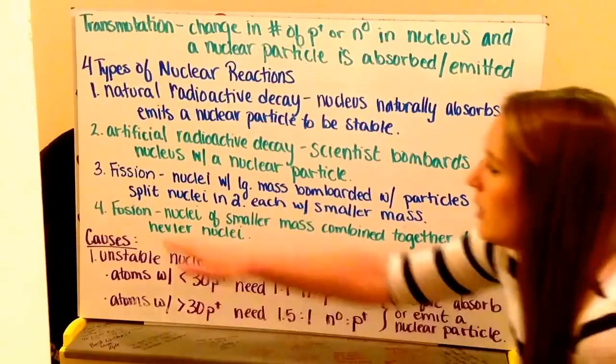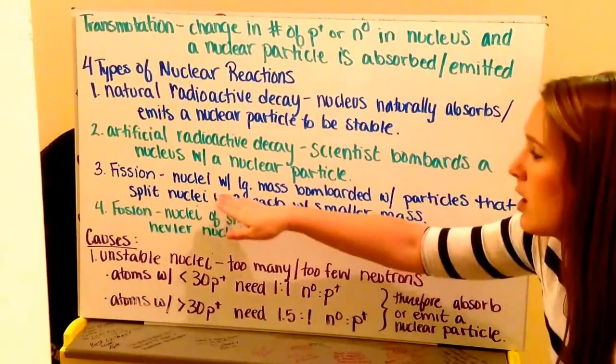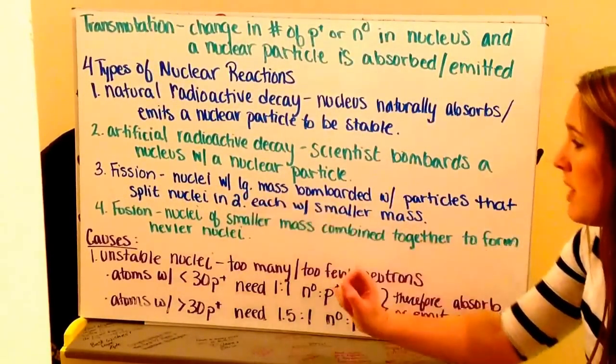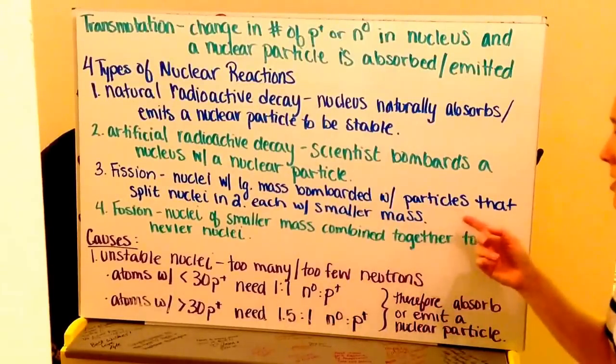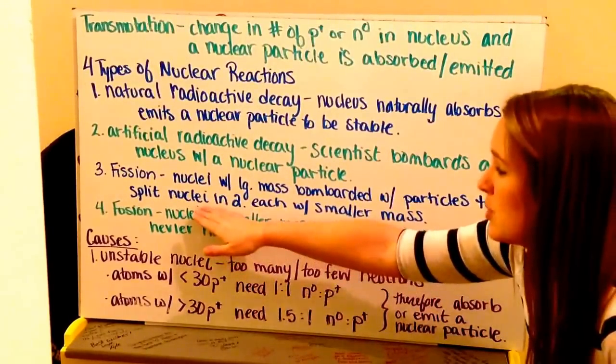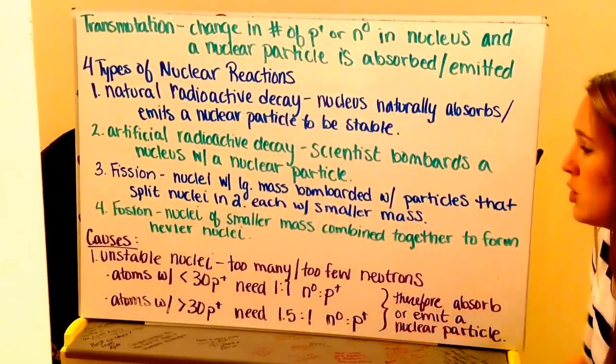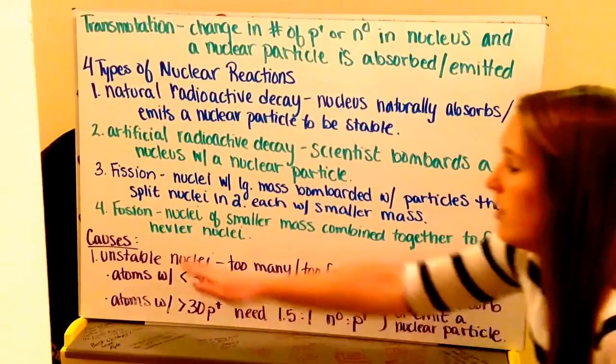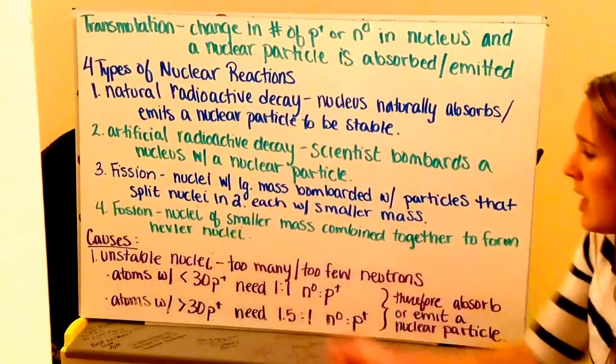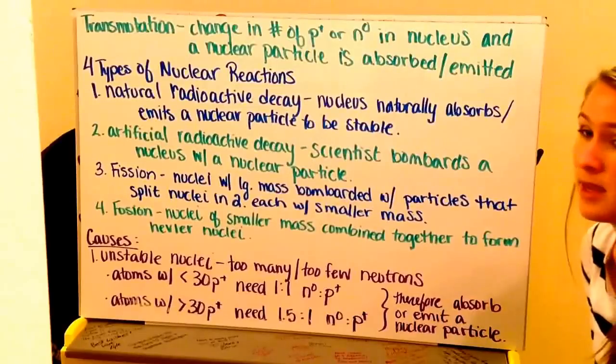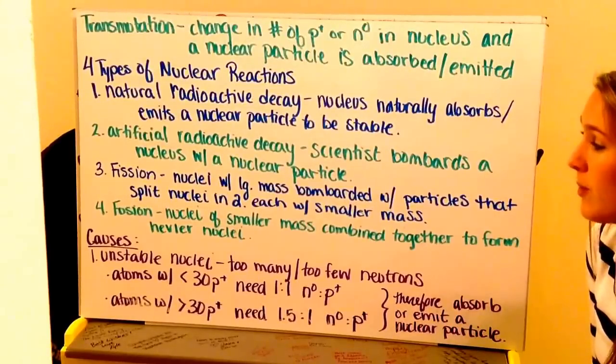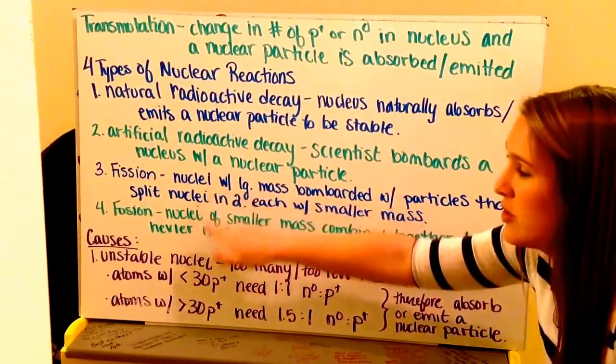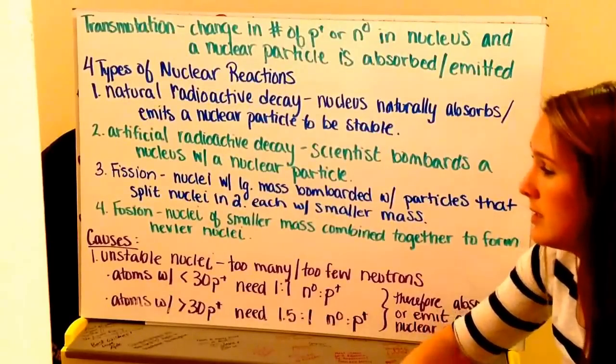We have fission. This is where a nuclei with a large mass are going to be bombarded with particles that are going to split that large nuclei into two smaller nuclei with smaller mass. And we have fusion, which is a nuclei of a smaller mass is going to be combined together to form a heavier nuclei. And we'll talk more about fission and fusion in the upcoming days.